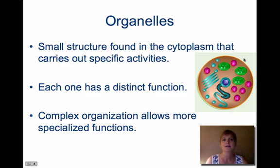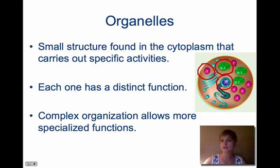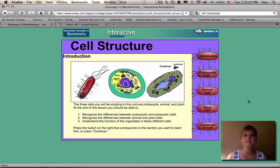Organelles are small structures found inside the cytoplasm of the cell. Each one has a distinct function. This complex organization — having all of these different organelles doing different jobs — allows cells to specialize. Think about your blood cells, brain cells, and bone cells: they're very different and have specialized functions. So now I'm going to go through a few of these different types of cells and show you some more detail about them.